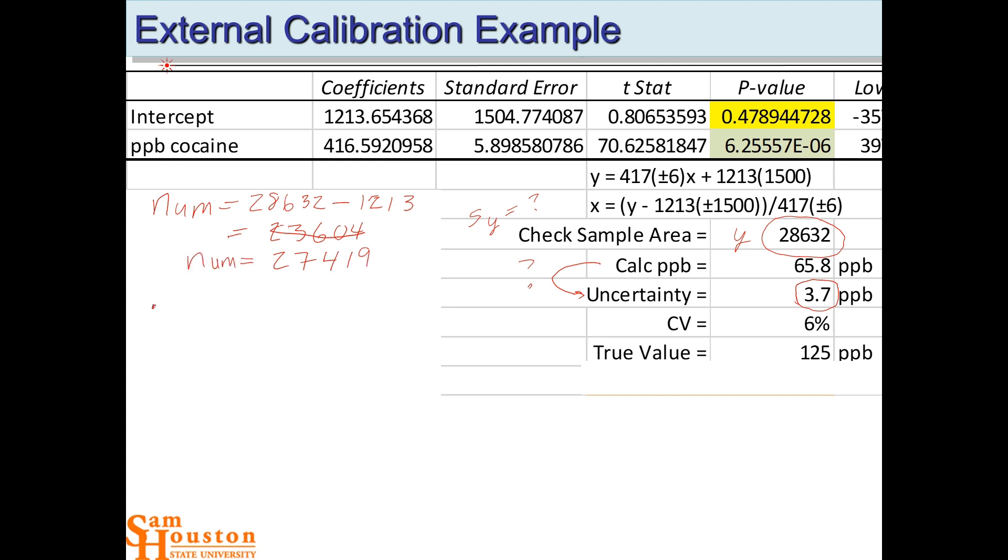What is S numerator? Okay. That's going to be the square root of S-Y squared plus S-B squared.